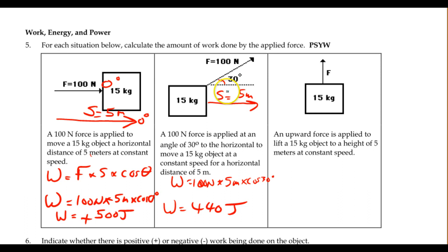And in the next one, an upward force is applied to lift a 15 kilogram object to a height of 5 meters at constant speed. Now, since we're going to be moving at constant speed, all the forces have to add up to 0. That means that force F is going to essentially have to be equal to the weight of the box. So if we use 10 newtons per kilogram to keep it simple, then the force that we're applying is going to be 15 kilograms times 10 newtons per kilogram.